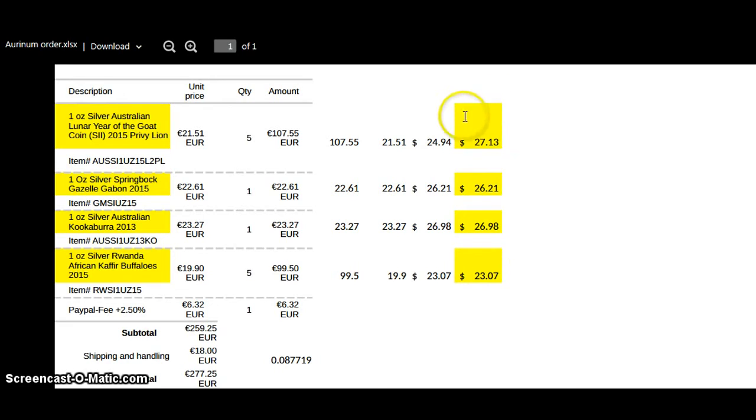The Goat, the Lunar Goats cost $27, although they were supposed to be Lion Privy's, and they were generic Lunar Goats. The Spring Bok Gazelle, $26. I think that's a great price on that coin. And, I bought a 2013 Kook. So, anyway, I think the Arunium Buffalo pricing is fantastic.